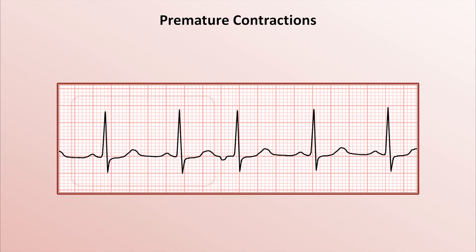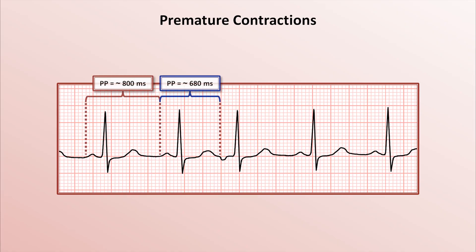But then the third set of waveforms is a little different. Specifically, the P-wave has a different morphology than the preceding two. In this case it's inverted, but it does not necessarily need to be — it just needs to be different. The different P-wave appears to come earlier than expected, meaning that the P-to-P interval between the second and third beats is shorter than that between the first and second beats.